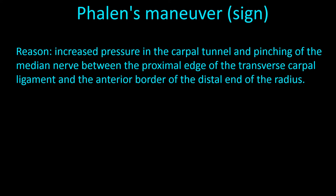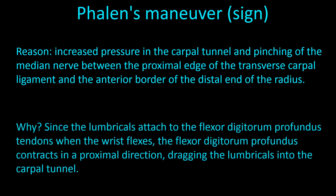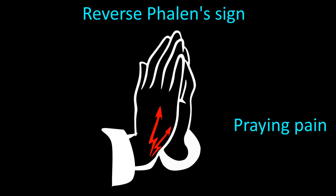The increase in pressure results from the dragging of the lumbricals into the carpal canal by the proximal shortening of the flexor digitorum profundus tendon during forced wrist flexion. The term reverse Phalen consists of similar findings as in the Phalen sign but with the wrist extended — this is much less reliable than the usual Phalen sign. Some patients use the term 'praying pain' for what happens to them when they take this posture.